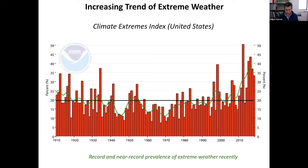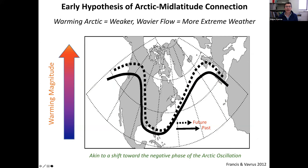So the Arctic is warming rapidly, extreme weather is generally increasing, and the natural question is whether these two things are linked. One of the fairly early hypotheses was put forth by Jennifer Francis and me in 2012, where we argued based on the thermal wind relationship that Arctic amplification should weaken the meridional temperature gradient, slow the jet stream or tropospheric polar vortex, and a weaker flow is often associated with a wavier flow that leads to prolonged periods of extreme weather such as droughts, heat waves, and floods.